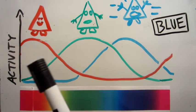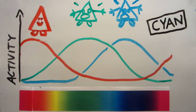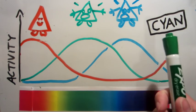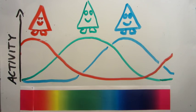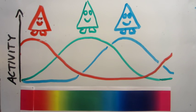If the blue cone is more active than the other two, you're seeing something blue. If the blue and green cones are more active than the red, you're seeing cyan. And if all of the cones are equally active, you're seeing gray or white. So all of the colors you see on this scale are a result of different combinations of activity in just those three channels.